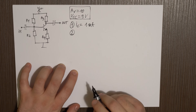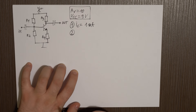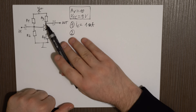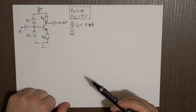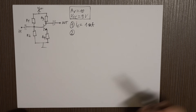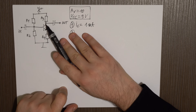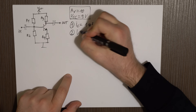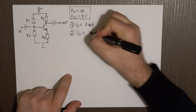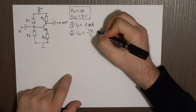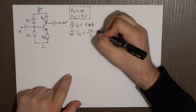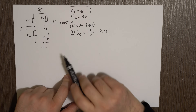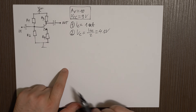Step number two is to choose the collector voltage. We need the output to be able to swing both up and down, so it makes sense to have the collector right in the middle between VCC and ground. So VC equals VCC divided by 2, which is 4.5 volts. We need this later and you'll see why.